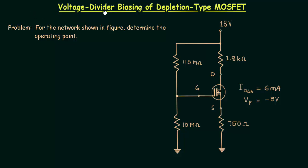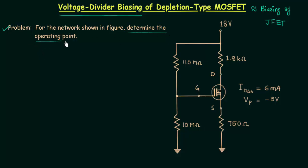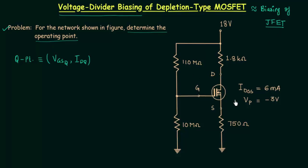We already know how to deal with voltage divider biasing because we completed this biasing scheme in case of JFET. Biasing of depletion type MOSFET is almost the same as biasing of JFET, so we will directly start with a problem. In this problem we will determine the operating point — the quiescent point — and the two coordinates are VGSQ and IDQ. You can see the network on your screen, and this network is almost the same as it was in case of JFET, with only one difference.